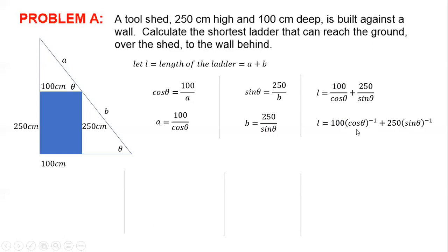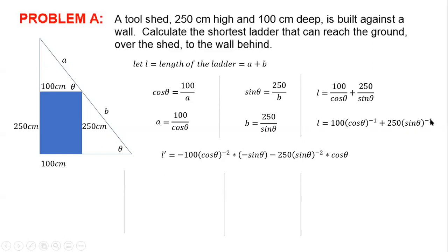My derivative: I take (–1)·100·cos(θ)⁻² times the derivative of the inside, which is –sin(θ). The derivative of cosine is minus sine. For the second term, I multiply (–1)·250·sin(θ)⁻² times the inner derivative, which is cos(θ). This represents my derivative of the relationship between the length of the ladder and the angle the ladder makes with the ground.